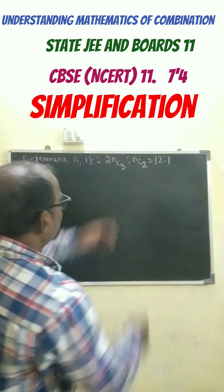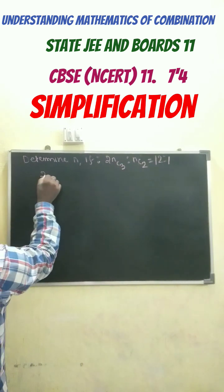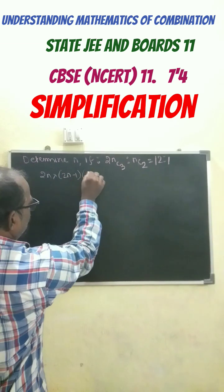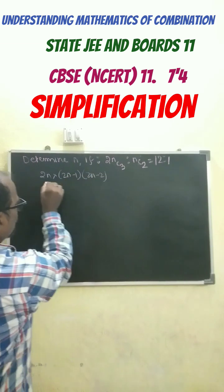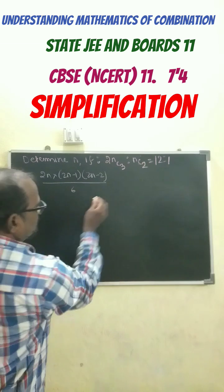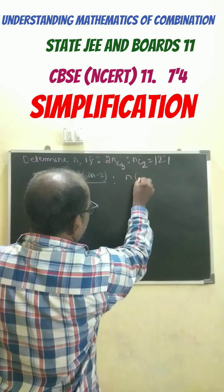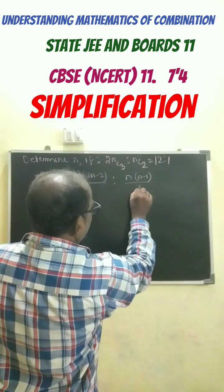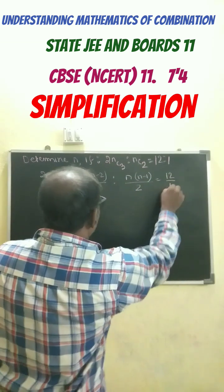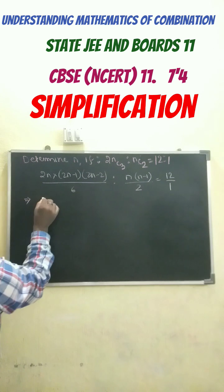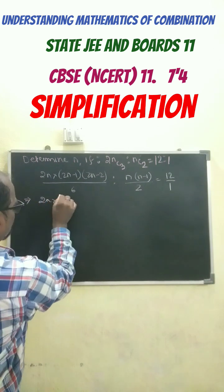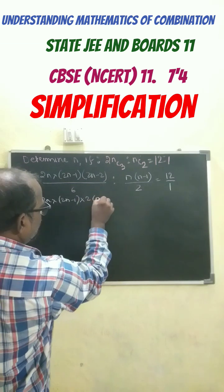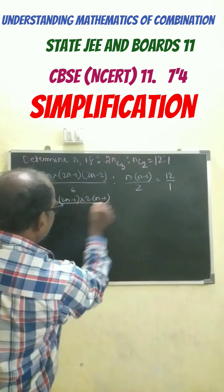So you have to find out here n. So this can be written as 2n into 2n-1 into 2n-2 by 6 is 2n into n-1 by 2 equals to 12 by 1. So further this can be written as 2n into 2n-1, taking 2 common from here, into 2n-1 by 6.